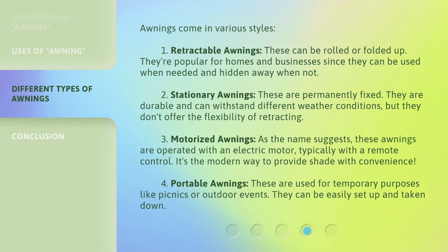Stationary awnings are durable and can withstand different weather conditions, but they don't offer the flexibility of retracting. Three: motorized awnings — as the name suggests, these are operated with an electric motor, typically with a remote control. It's the modern way to provide shade with convenience. Four: portable awnings — these are used for temporary purposes like picnics or outdoor events; they can be easily set up and taken down.